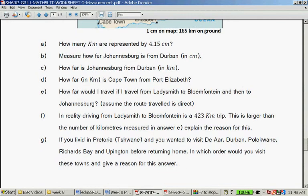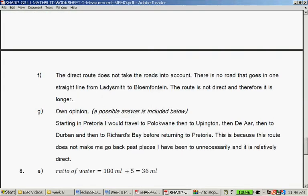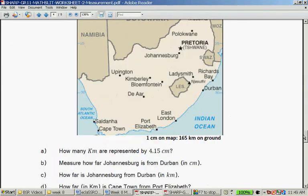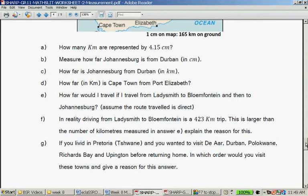If you lived in Pretoria or Tshwane and you want to visit Durban, Polokwane, Richard's Bay and Uppington before returning home. In which order would you visit these towns? And give a reason for your answer. So, starting Pretoria, I would travel to Polokwane, then to Uppington, then to Durban and then to Richard's Bay before returning to Pretoria. This is because this route does not make me go back past places I have been to unnecessarily and it's relatively direct. You can also go the other way around. So, any order as long as you have a good explanation.